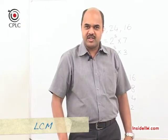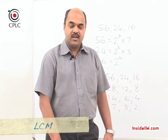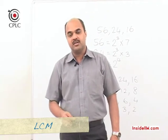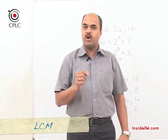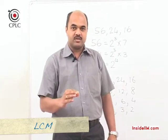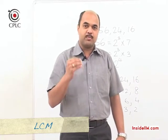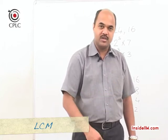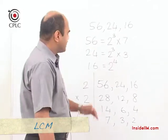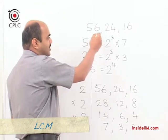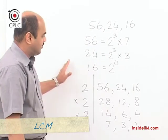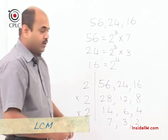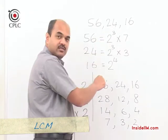Having understood the concept of HCF, let us now see what is the meaning of LCM. LCM stands for Least Common Multiple. LCM denotes that number which is the smallest number that is a multiple of all the given numbers — the least possible common multiple — meaning it is the smallest number divisible by the given numbers. Let us take up the same example: for numbers 56, 24 and 16 we calculated the HCF as 8. For LCM, we have already factorized these three numbers. For HCF we took only the common factor and the smallest power.